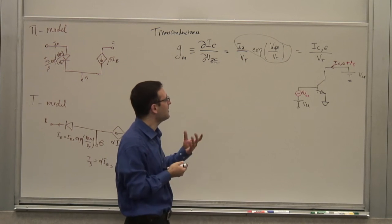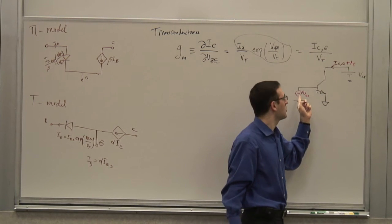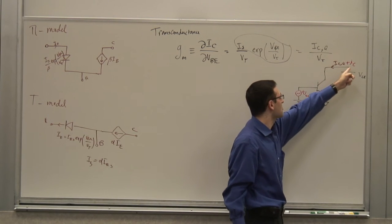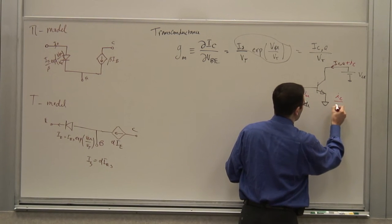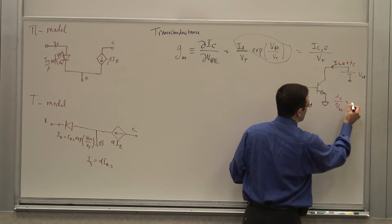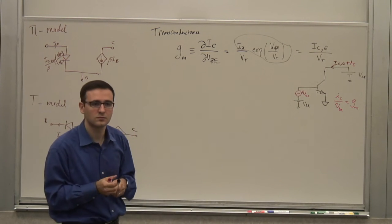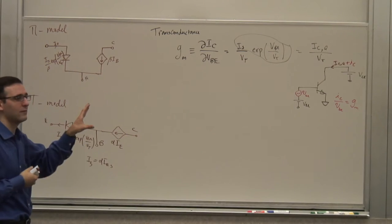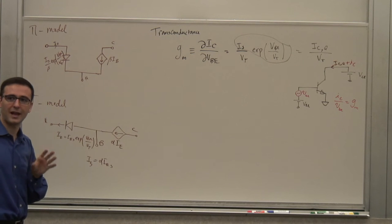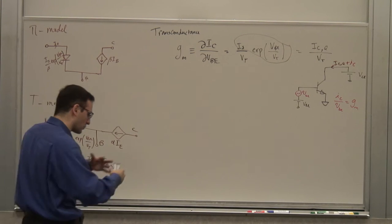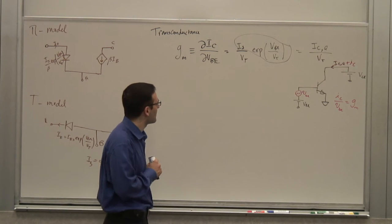If you are interested in the ratio — say, you're trying to amplify an AC signal — you're really interested in the ratio of ic/vbe, which is nothing but gm. I'm sure most of you are familiar with this concept already, but I just want to make sure there are no gaps, because this is very essential to a lot of things we'll do later.